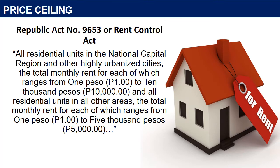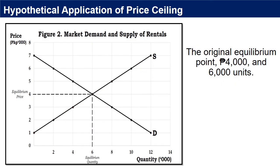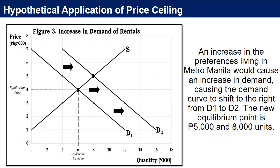In the Philippines, we have a government policy on rent control under Republic Act No. 9653. The act focuses on the regulation of rent of certain residential units. Section 5 of the article states that all residential units in the National Capital Region and other highly urbanized cities, with total monthly rent for each ranging from 1 peso to 10,000 pesos. The graph shows the original supply and demand curves S and D, with the original equilibrium point at 4,000 pesos and 6,000 units. What do you think will be the effect of greater income or an increase in the preferences for living in Metro Manila?